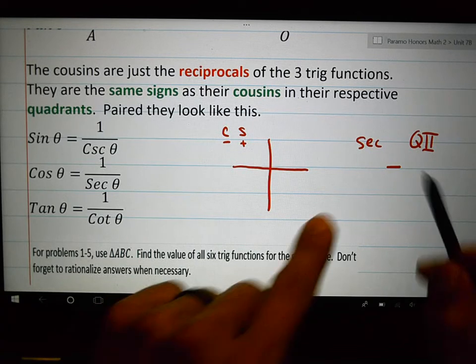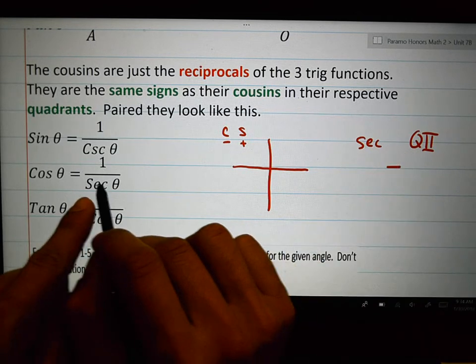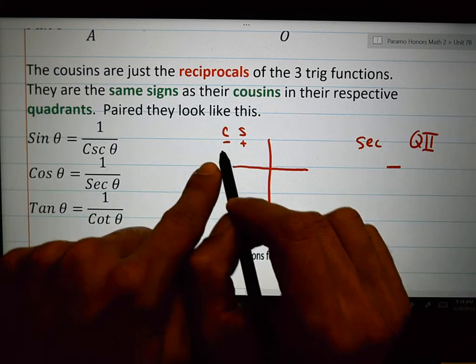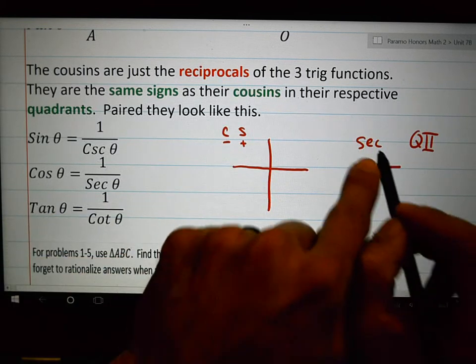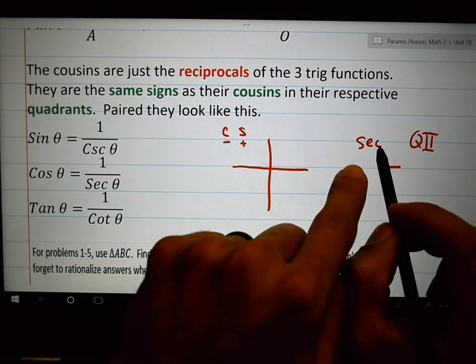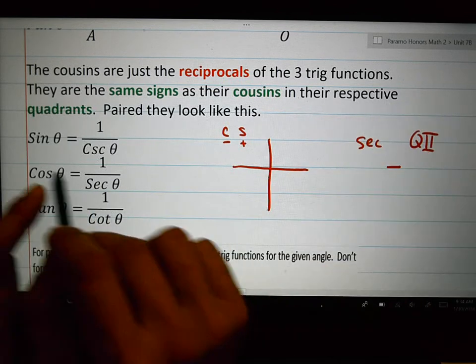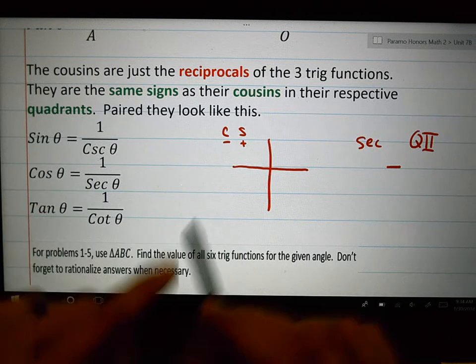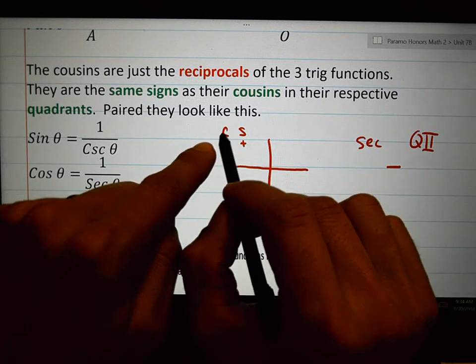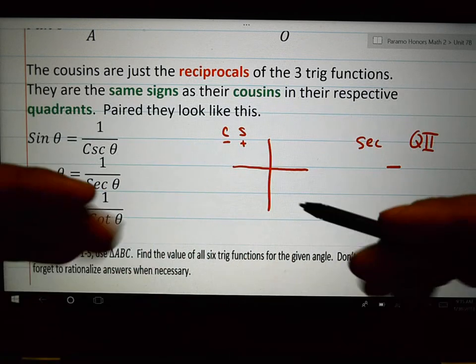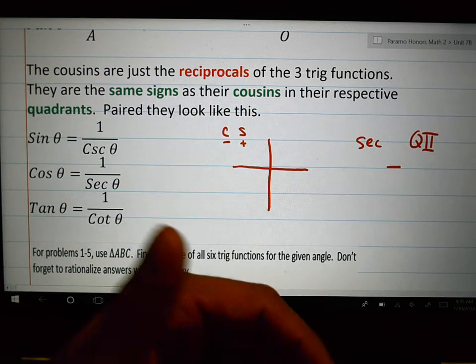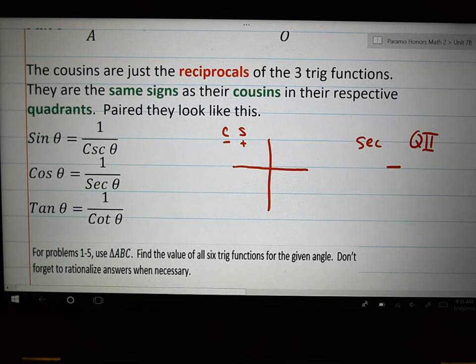Let's review. Secant is the cousin to cosine. In quadrant two, the cosine is negative. Therefore, the secant has to be negative. You have to know that the secant is the cousin to cosine because if you know the cosine sign, that's right, whether it's positive or negative, then you'll know whether the secant is going to be positive or negative in quadrant two. Okay?